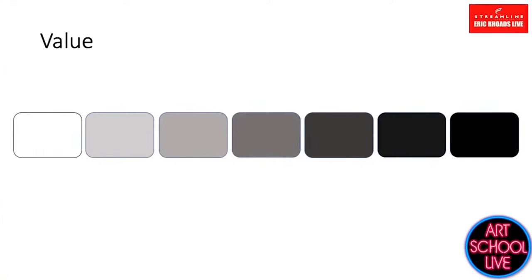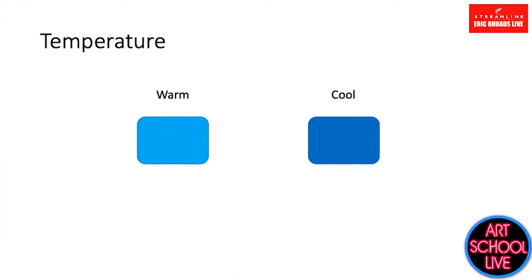The next thing I consider in the hierarchy is temperature. Temperature is a little tricky because the primaries and secondaries each have an inherent temperature. Blue is cooler than red; however, it's all relative. There can be a blue that is warmer than a cool blue — for example, cerulean blue compared to cobalt blue. Cobalt is a colder blue than cerulean. When thinking about temperature and color mixing, you have to consider how it relates to the other colors in that painting — only that painting.